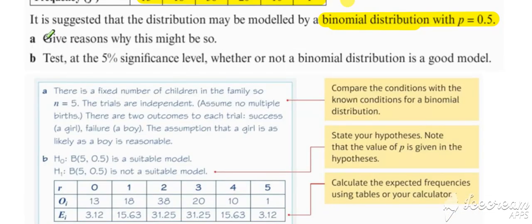But firstly, the question asks us to give reasons why a binomial might be appropriate for this scenario. They're quite often asking things like this to kind of justify assumptions of a binomial. So for this situation, there is a fixed number of children in a family. So n is equal to five.